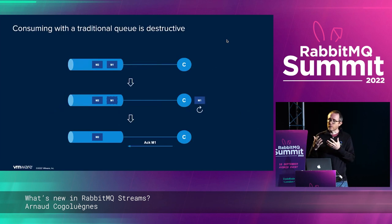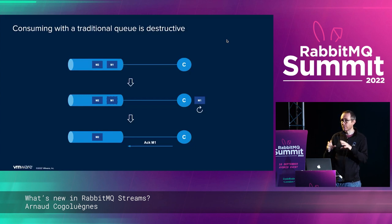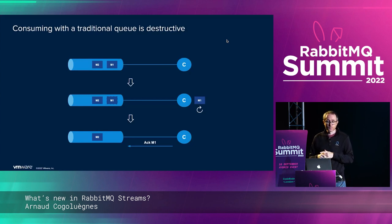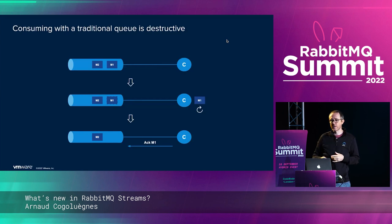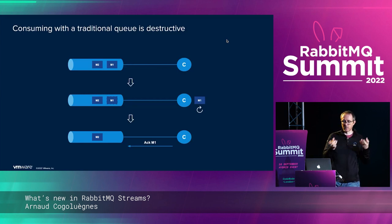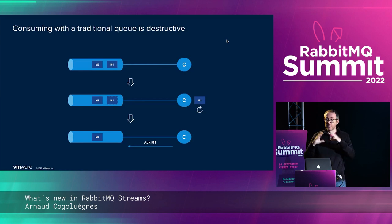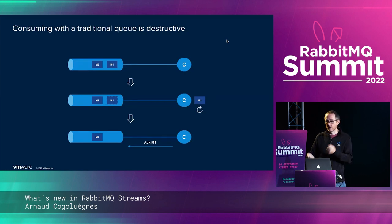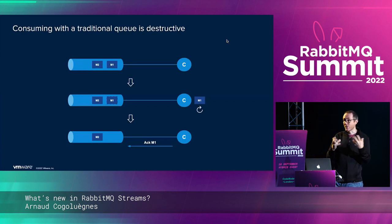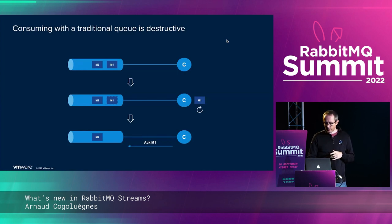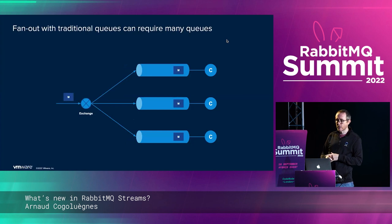Let's focus on how queues behave so we can see the difference with streams. With a regular consumption pattern, you have a consumer that gets a message, starts processing it, acknowledges the message, and then the message is removed from the queue. At the end, the message is no longer in the queue. This is what we call destructive consumption — reading is not read-only.